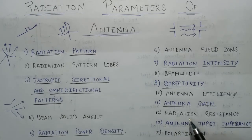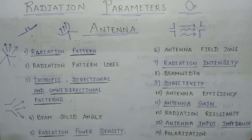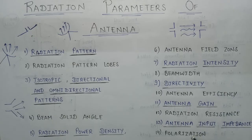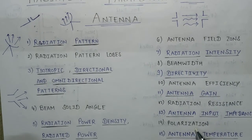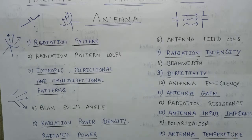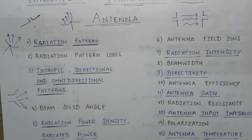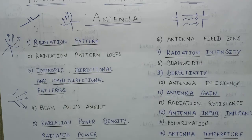In the twelfth lecture we will talk about radiation resistance, which is offered during the transmission of power by an antenna. In the thirteenth lecture we will talk about input impedance. After that we will talk about various polarization effects: linear polarization, elliptical polarization, and circular polarization. The fifteenth lecture will cover antenna temperature — how much noise the antenna generates when placed in a given environment.